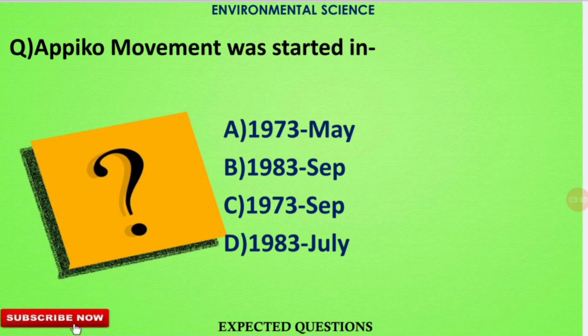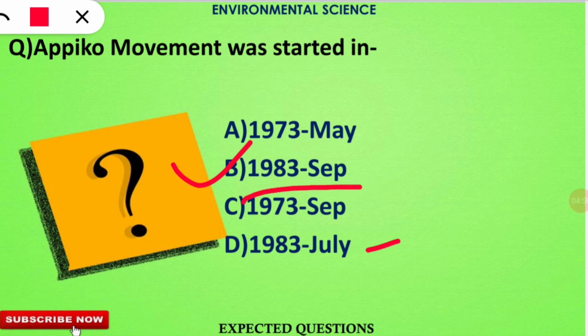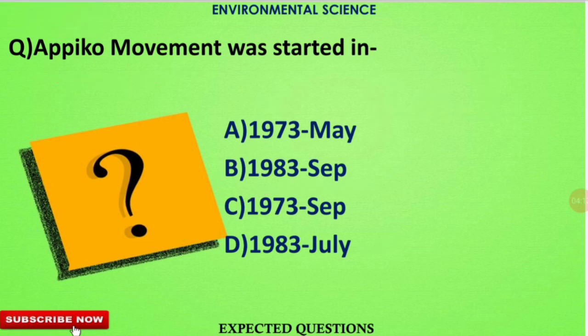The next question is related to a struggle called the Appiko movement. It asks: the Appiko movement was started in which of the following years? The correct option is option B — don't get confused between July and September. In September 1983, the Appiko movement was started in Karnataka. Note that in 1973, there was a related movement for protecting the forest.